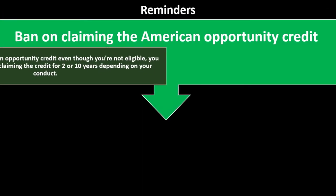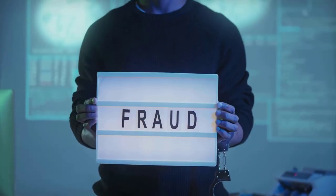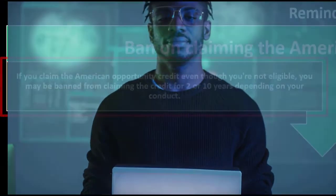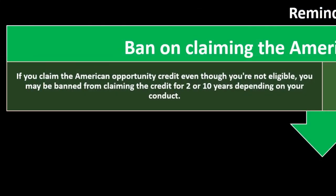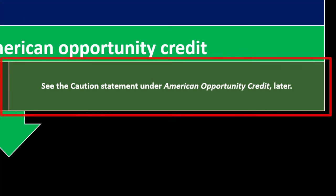Ban on claiming the American Opportunity Credit: if you claim the American Opportunity Credit even though you're not eligible, you may be banned from claiming the credit for 2 to 10 years depending on your conduct. These credits are subject to potential fraud, and this ban is one way to disincentivize that. See the caution statement under American Opportunity Credit for more detail.